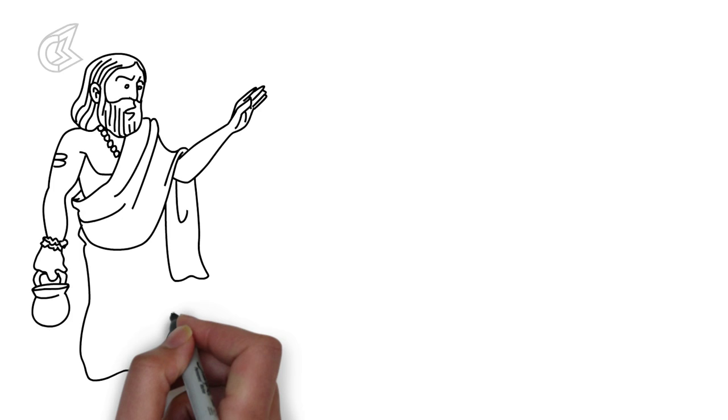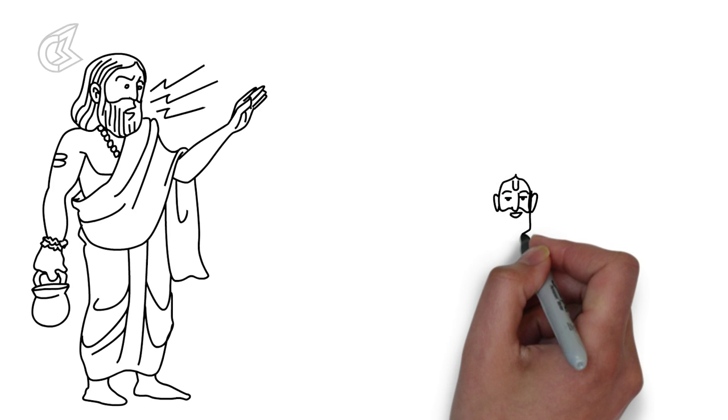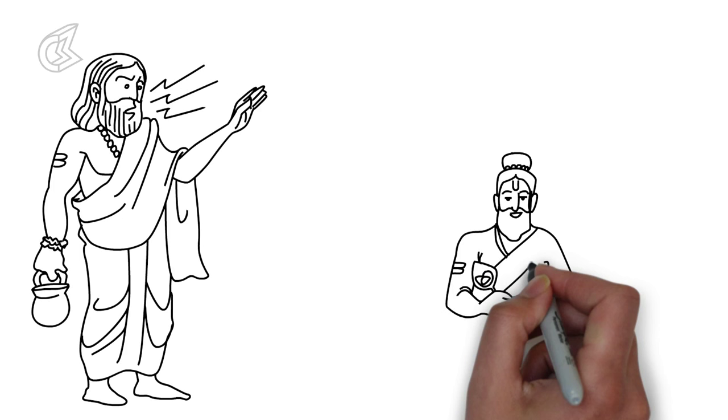This curse came in the form of a shloka. The beauty of the shloka turned Valmiki into a poet and the curse he had unwittingly uttered became the first Sanskrit shloka.